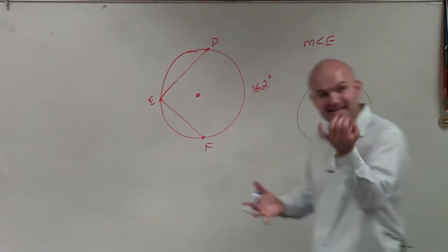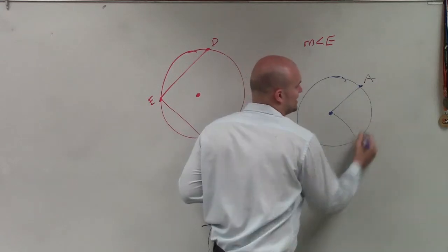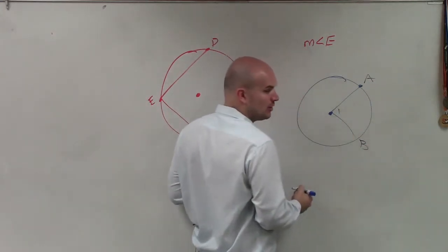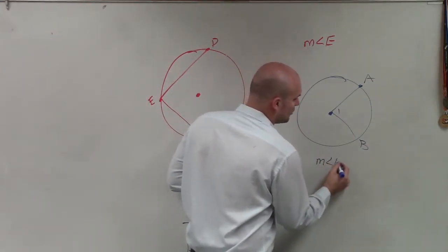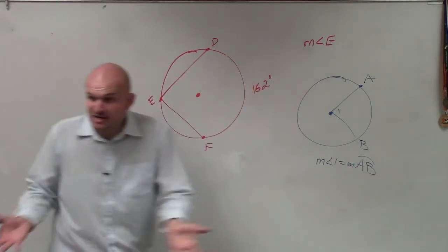Remember, an angle that has the vertex at the center. If we have these two points, A to B, and we call this measure of angle 1, we said the measure of angle 1 is equal to the measure of your arc AB. They're equal in measurements.